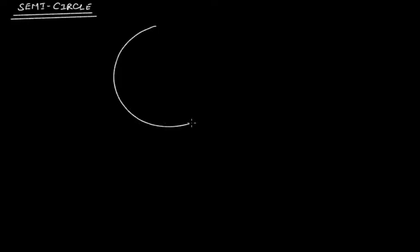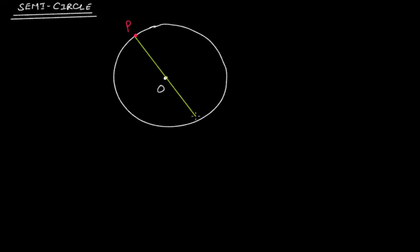So what a semicircle is — if you have this circle, it's a rough diagram. It has a center, that's the center of the circle. Let's say we are taking two points: point P here and point Q. If I draw a line through these two points, this is a chord.